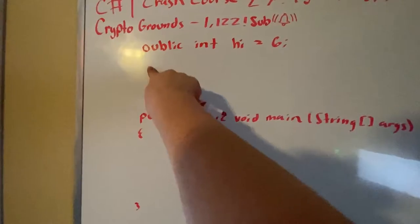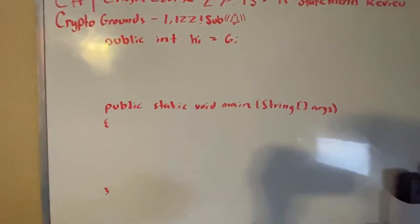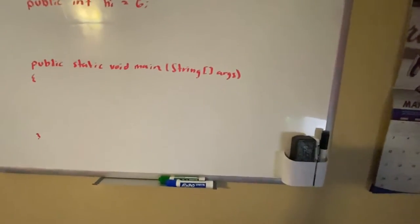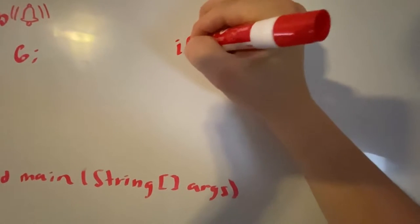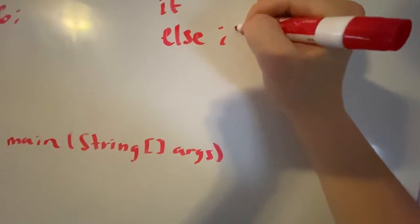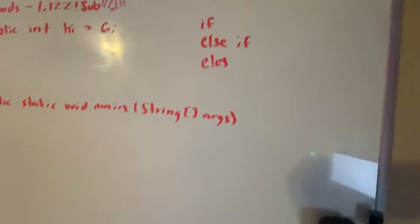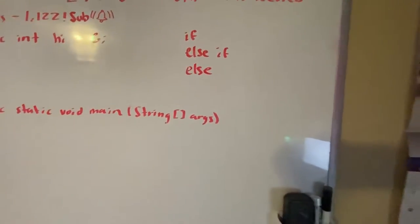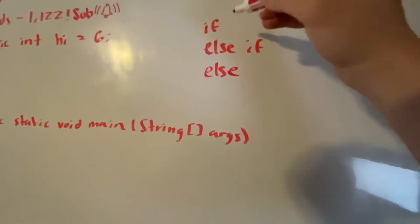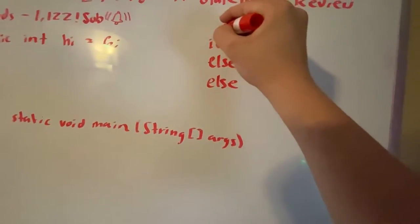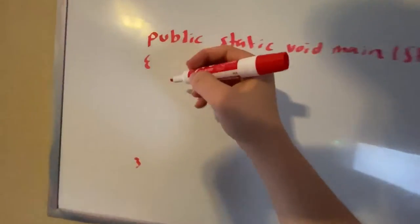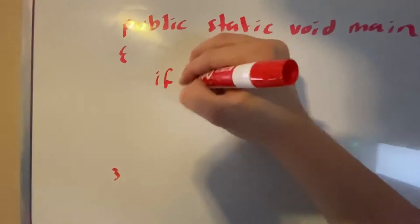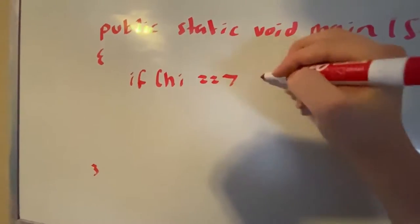First we have a public int hi which we're going to set at 6. Now there's three types of conditions we can do with if statements: we have if, else if, and else. Basically what I talked about in one of my previous videos is that once it checks this right here, if it's true, it's not going to check any of these two.